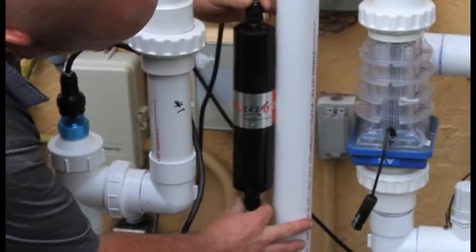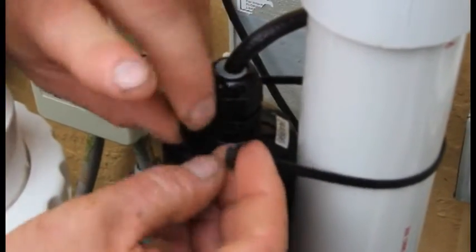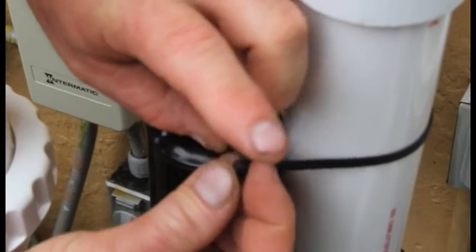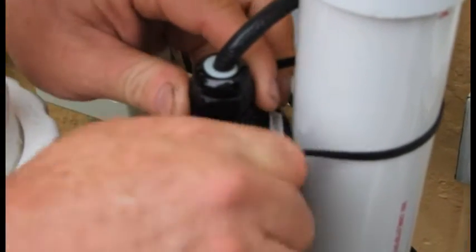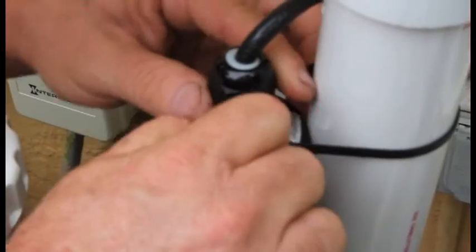Secure the Nuvo transformer to a pipe near the chamber so that it is not sitting on the ground. If you install the unit sitting on the ground, it will void the warranty. Secure the transformer to the pipe using tie wraps.